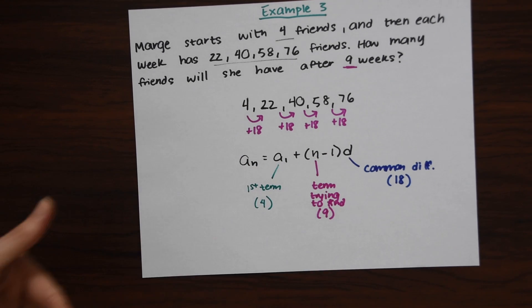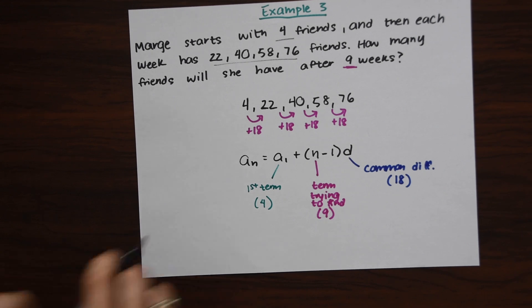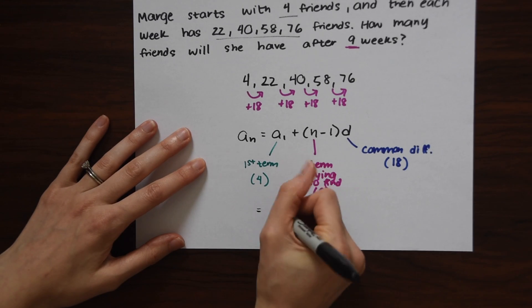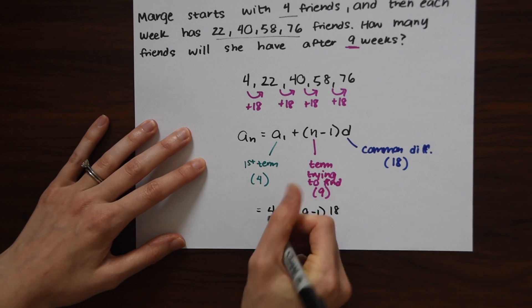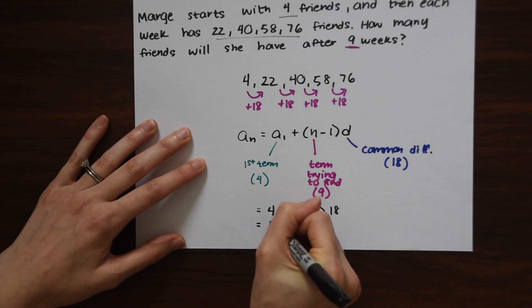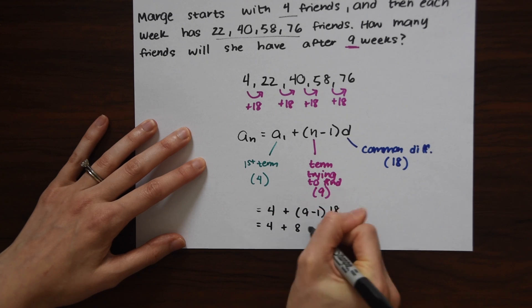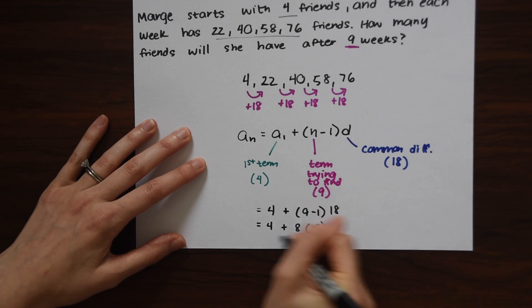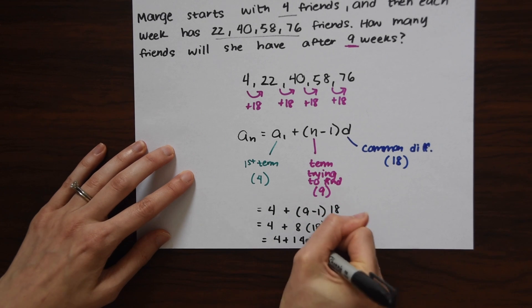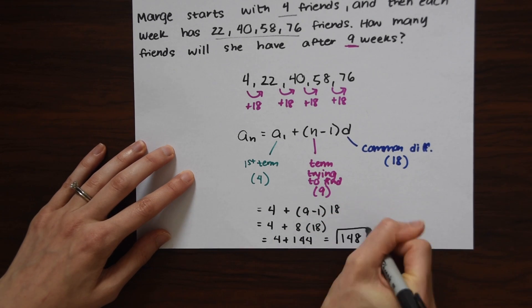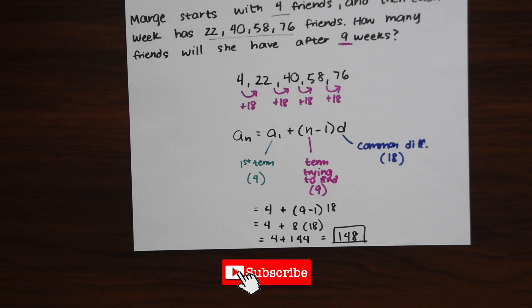So now we just need to plug in our numbers and solve. So this is equal to 4 plus 9 minus 1 times 18, which equals 4 plus 8 times 18, which equals 4 plus 144, which equals 148. And that's our answer.